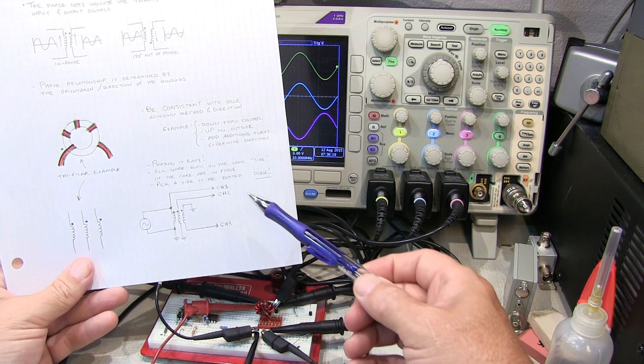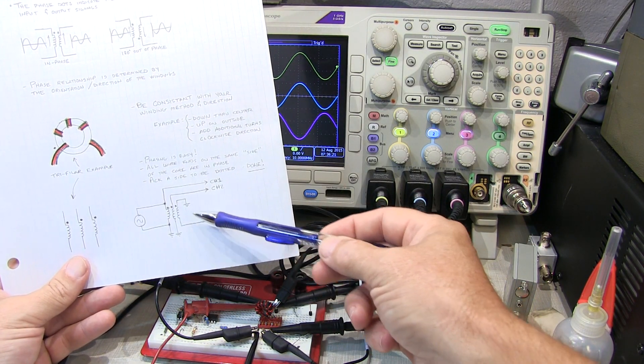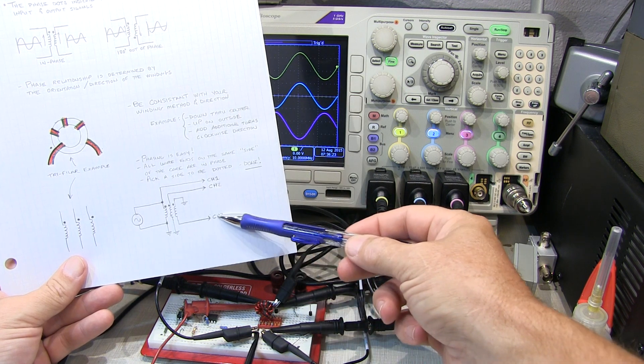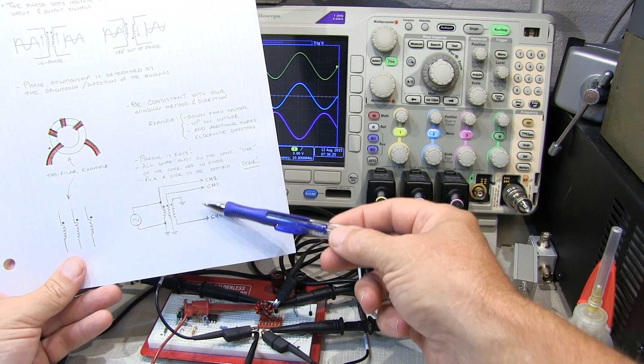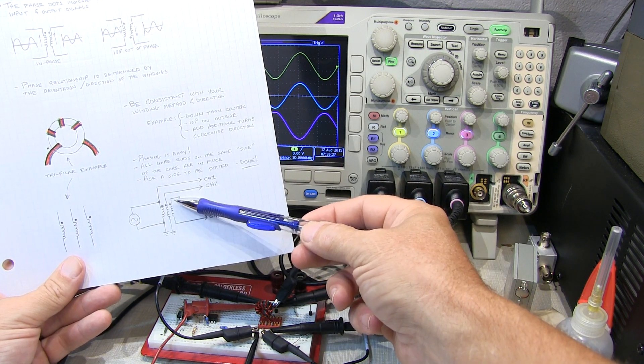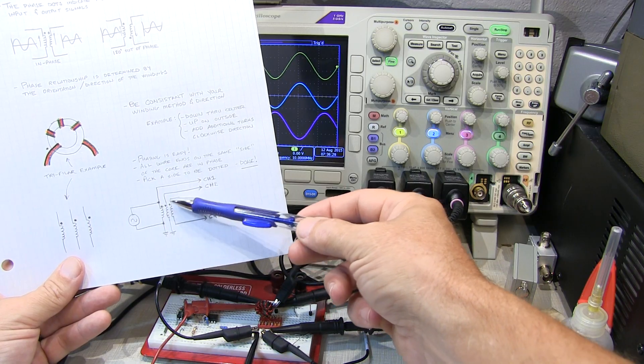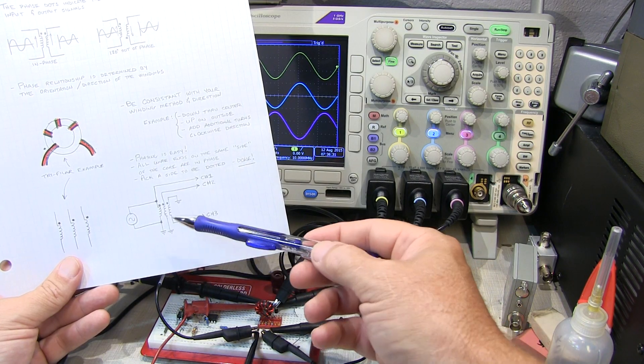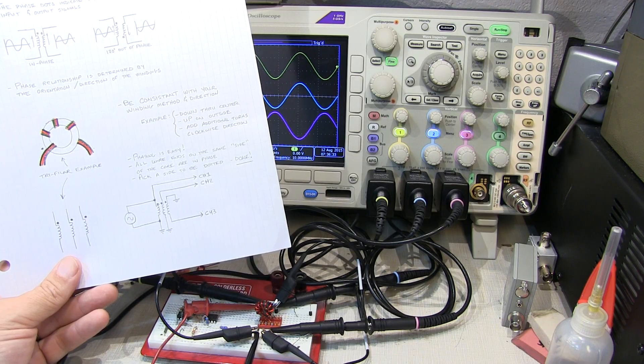So we can see by looking at the dots on the transformer, how this channel three is 180 degrees out of phase from channel one and two, because we've reversed the direction of how we're connecting up with respect to the phasing dots of the three windings.